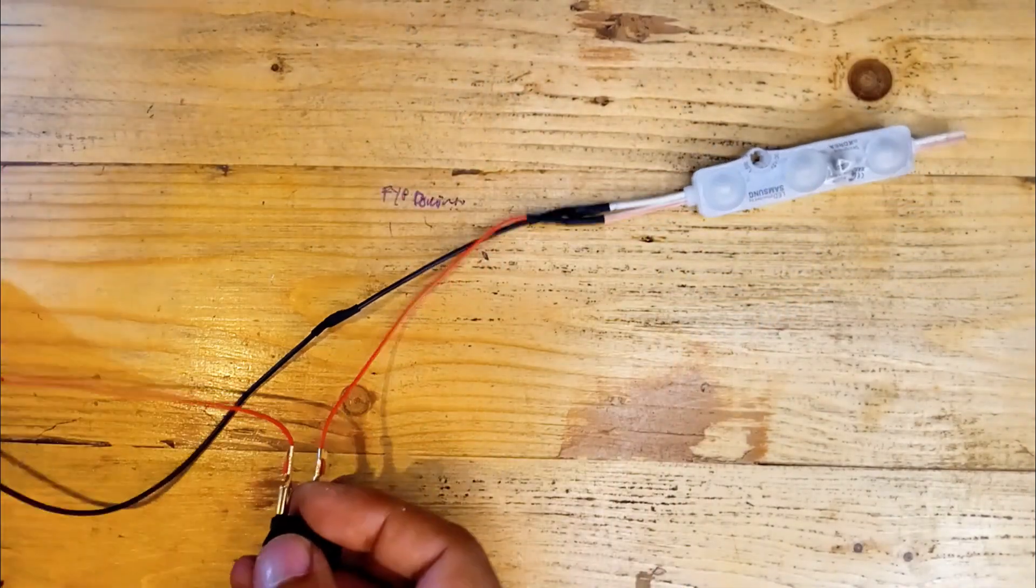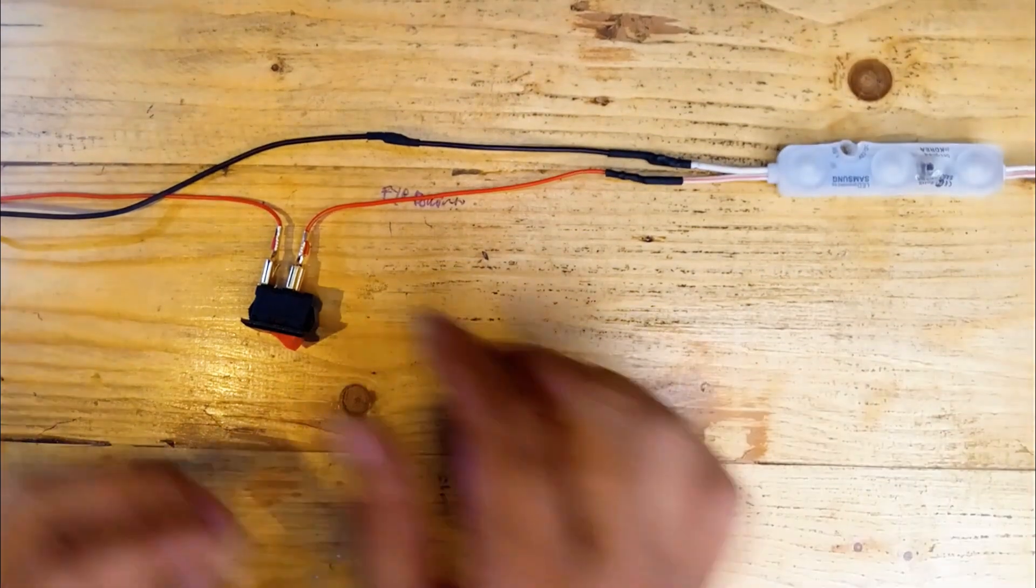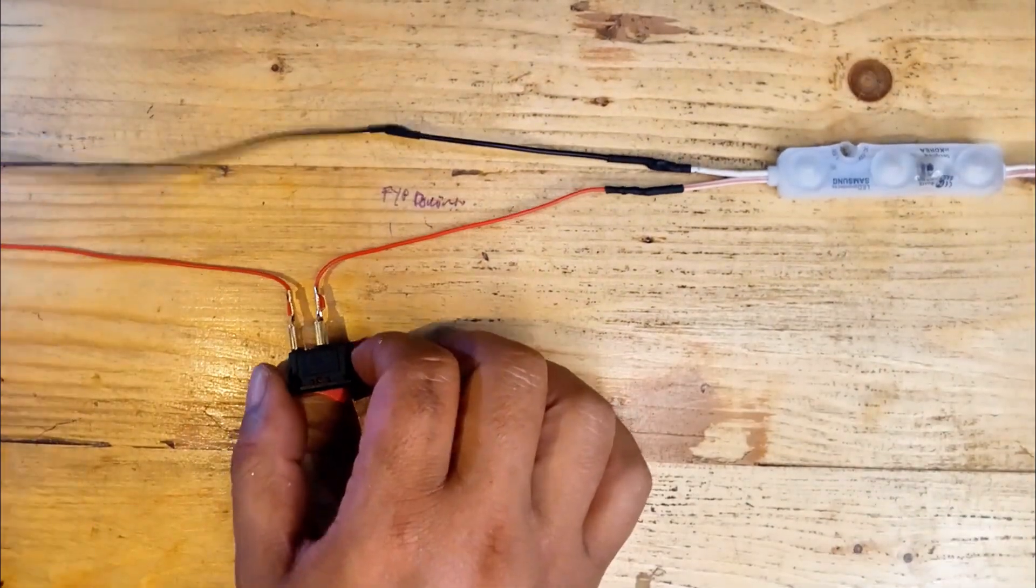Finally I'll connect the negative terminal of the LED light to the negative terminal of the battery with a black wire.